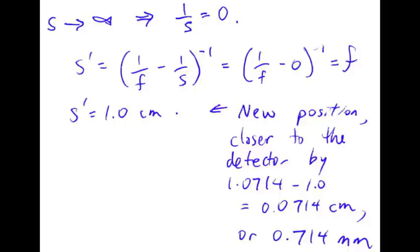The new position of the lens is 1 centimeter from the detector. The old position was 1.0714 centimeters. So we're now closer to the detector by the difference, which is 0.0714 centimeters or 0.714 millimeters. Looking at the answers, that's closest to answer A.